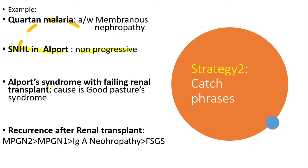A common RCP question involves an Alport's patient who has a failing renal transplant — the cause in that case is Goodpasture syndrome. The glomerular basement membrane from the new kidney acts as a foreign antigen for the recipient, as the body has not been previously exposed to glomerular basement membrane proteins. As a result, anti-GBM antibodies are produced, leading to Goodpasture syndrome. Regarding recurrence after renal transplant, membranoproliferative glomerulonephritis ranks quite high, followed by IgA nephropathy, then focal segmental glomerulosclerosis.